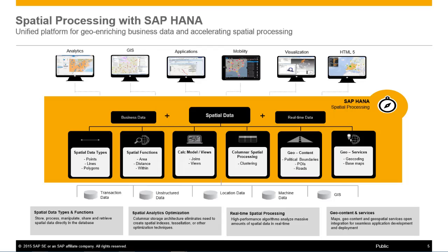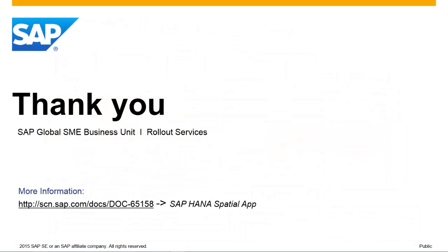SAP HANA has been highly optimized for spatial processing, requiring no additional indexes or reselection tables for performance purposes. And most importantly, all this is part of SAP HANA natively. Check out the technical guide on how to develop and leverage the SAP HANA spatial app via the SAP Community Network link. The showcase of this spatial app on SAP HANA has been developed by the SAP Business One Solution Architects team and is for demonstration purposes only.